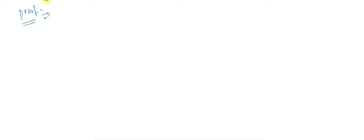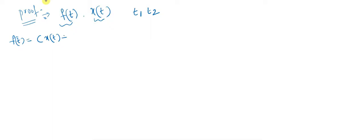Let's prove the error concept. First, let's consider two signals. I will consider f of t and x of t. x of t can be represented over the intervals t1 to t2. We will take the error. f of t is equal to c into x of t plus e of t. This is the first equation.